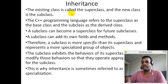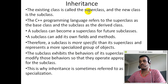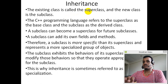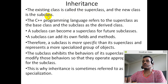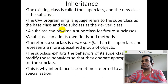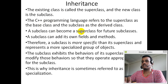The existing class is called the super class. A new class is called the sub class. In Java, the keyword used is 'extends'. In C++ programming, the base class is the super class and the derived class is the sub class.